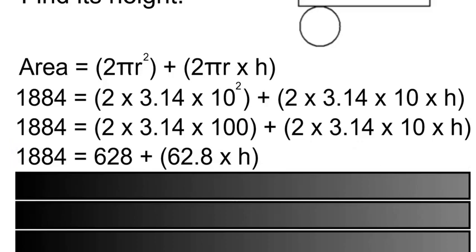1,884 will equal 628 plus 62.8 times our height.